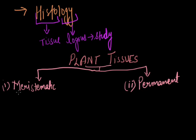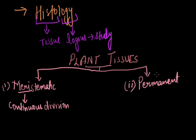Meristematic means continuous division, while permanent means the cells are not in the state of division. They are incapable of division.